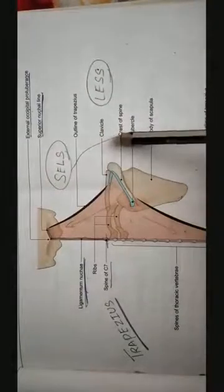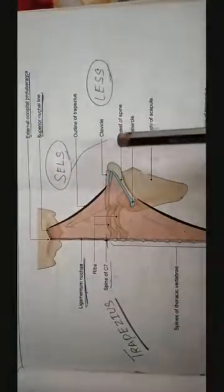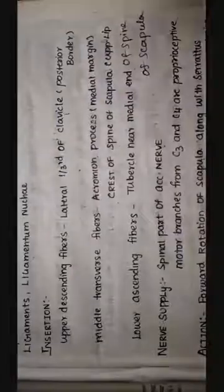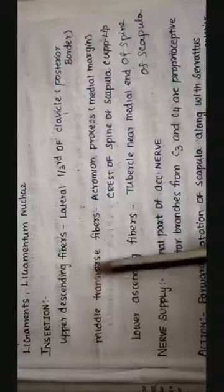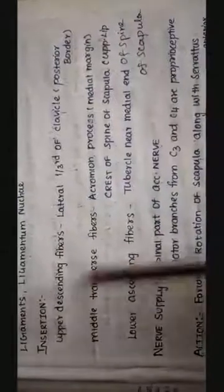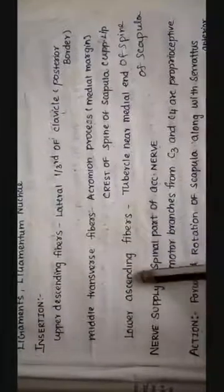Now, let us discuss about the insertion of the trapezius muscle in detail. At insertion, the trapezius muscle is divided into three fibers namely, upper descending fiber, middle transverse fiber and the lower ascending fiber.